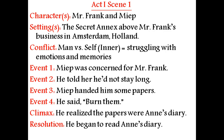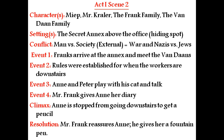Scene Two. In this scene we have characters: Miep, Mr. Kraler, the Frank family, and the Van Daan family — so there are lots of characters in Scene Two. The setting is again the secret annex, the hiding spot above the office, which keeps coming up again and again because almost all the incidents and events in the play happen there.